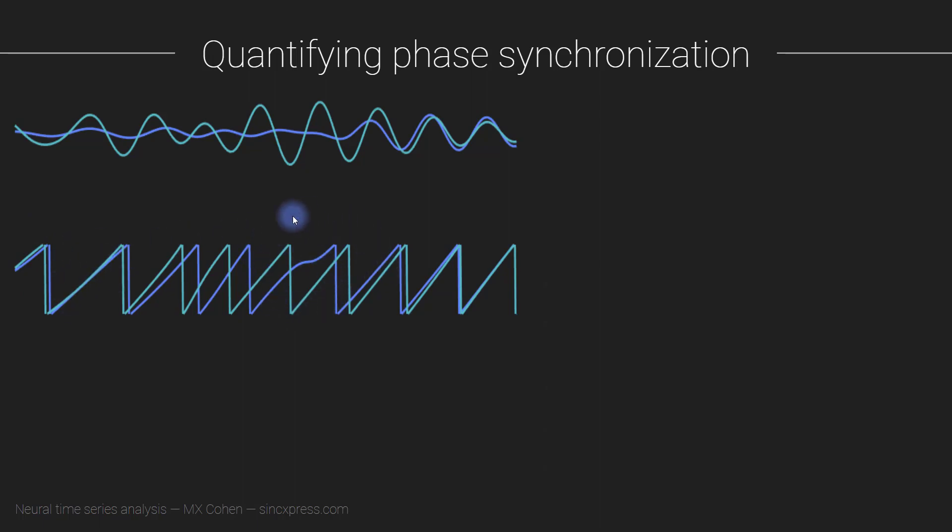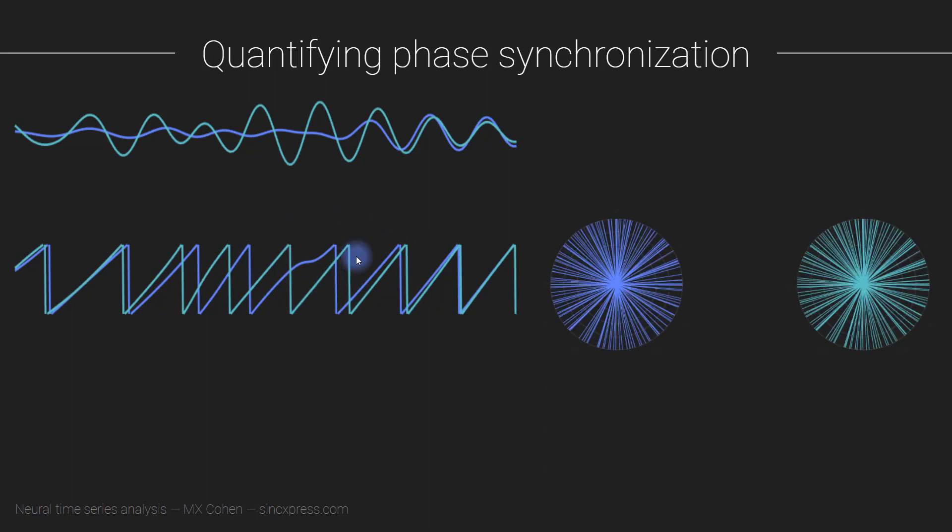Now the thing is, if you would just look at all of the phase angles from this entire time series, separately for the blue signal and the green signal, those phase angles are pretty much uniformly distributed all throughout phase space. That is not surprising at all. We are going through many cycles here, like 10 cycles. So of course, it's going to span the entire range.